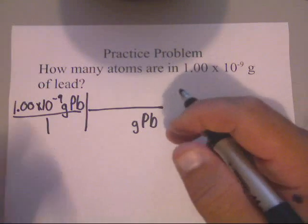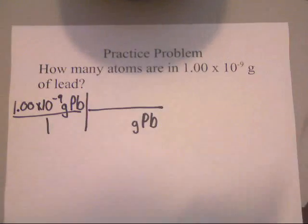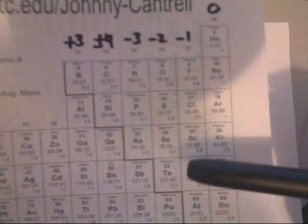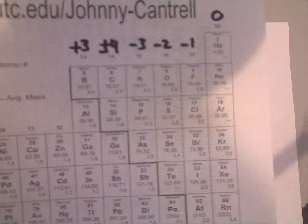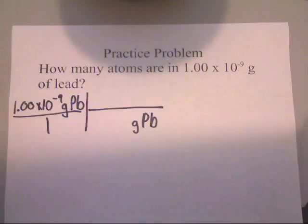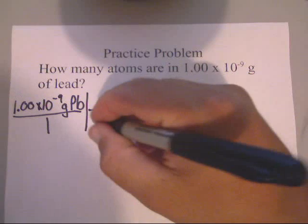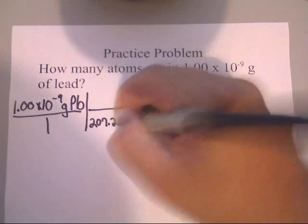Now, to get grams of Pb, all you got to do is look in your periodic table and your periodic table states that Pb is 207.20. Do you see that, 207.20? Right there, 207.20. It's the 82nd element. So, it's 207.20 grams of Pb.